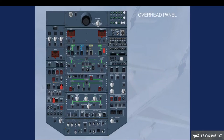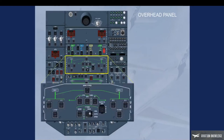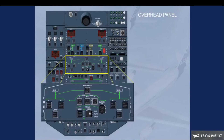For a closer look, let's select the fuel panel. On the left and right sides is the system name. For each system, there is a schematic diagram. Notice all push buttons are in the lights-out configuration. Click on the forward arrow to return to the cockpit.